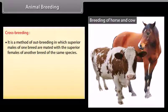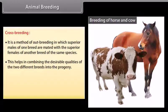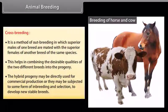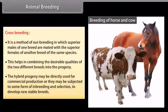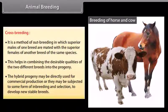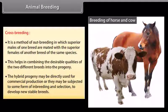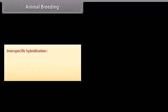Outcrossing is the best breeding method for animals that are below average in productivity and growth rate. Crossbreeding is a method of outbreeding in which superior males of one breed are mated with superior females of another breed of the same species. This helps in combining the desirable qualities of two different breeds into the progeny. One example of crossbreeding is Hisardale, a new breed of sheep developed by crossing Bikaneri ewes and Merino rams.